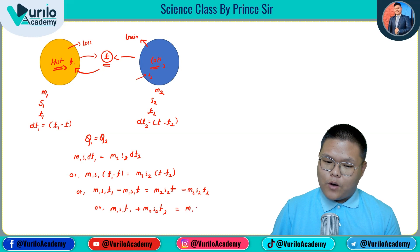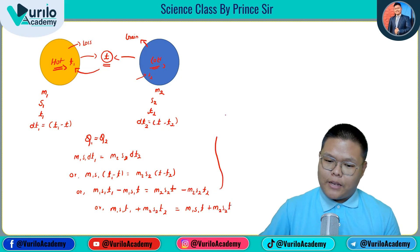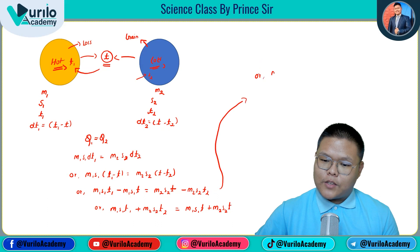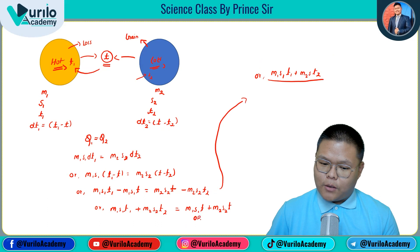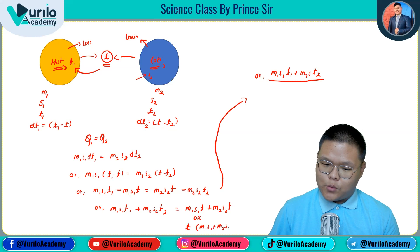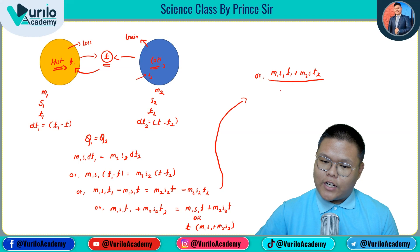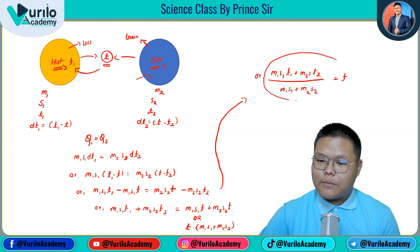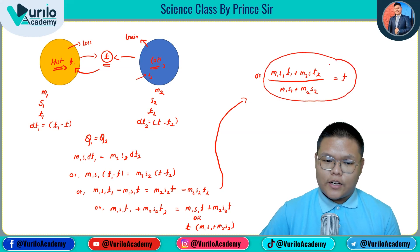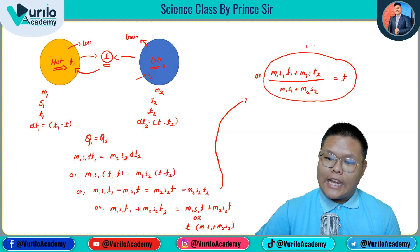Rearranging, we move terms with T to one side: M1 S1 T1 + M2 S2 T2 = M2 S2 T + M1 S1 T. Taking T common on the right side: M1 S1 T1 + M2 S2 T2 = T (M1 S1 + M2 S2). Therefore, the final temperature T = (M1 S1 T1 + M2 S2 T2) / (M1 S1 + M2 S2). If a question asks for the final temperature, use this formula directly.